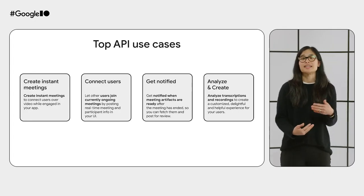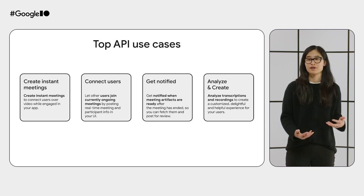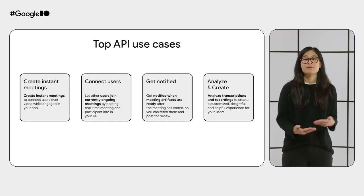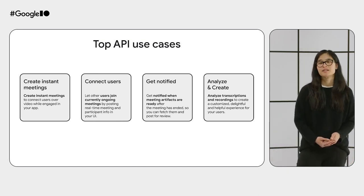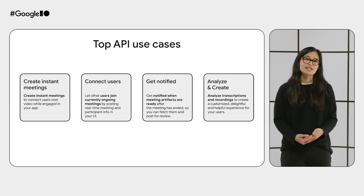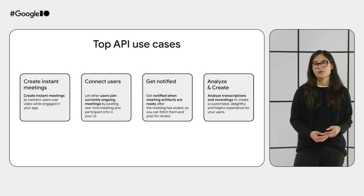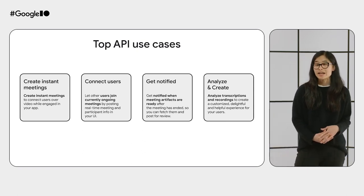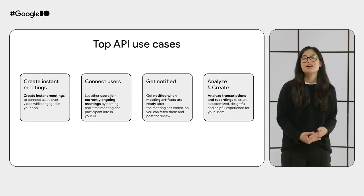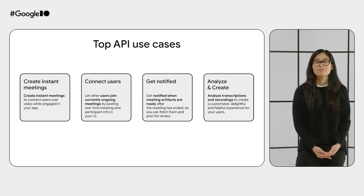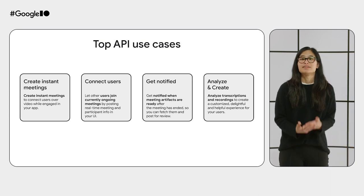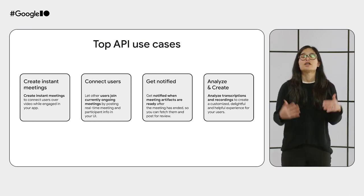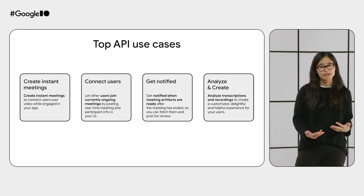We've been working with early partners on these APIs and I want to share some of the top use cases that have emerged. For example, you can create instant meetings that help connect your users while they are in your app. You can post real-time meeting information so that others within a domain may know that a meeting is happening and can join with a click. You can get notified when users come and leave a meeting to understand group size and adjust your content accordingly. You can also get notified when recordings or transcriptions are ready for fetching so you can start analyzing content and posting helpful insights for your users within the context of your app.